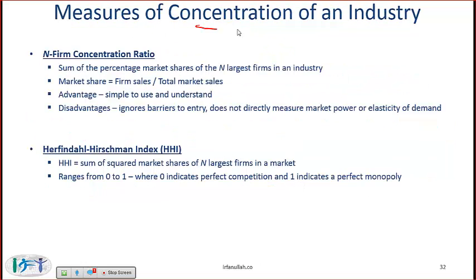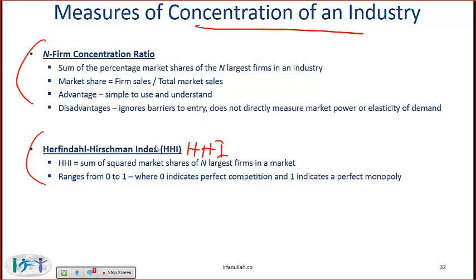You need to know the measures of concentration of an industry. The two big measures are the N-firm concentration ratio and the Herfindahl-Hirschman Index, more easily referred to as HHI. The N-firm concentration ratio is the sum of the percentage market shares of the N largest firms in an industry. For example, the four-firm concentration ratio takes the top four firms' market shares and adds them. A large number means a few major players, implying the industry is concentrated.